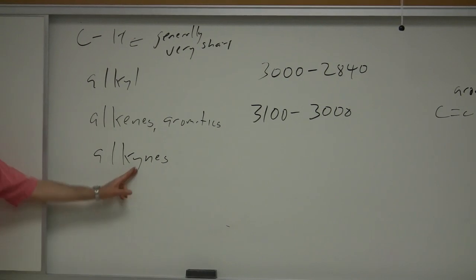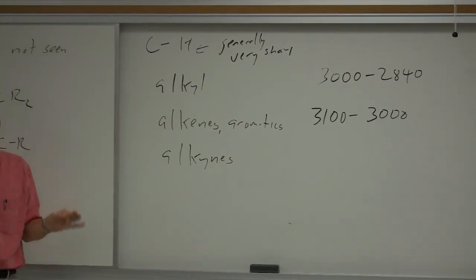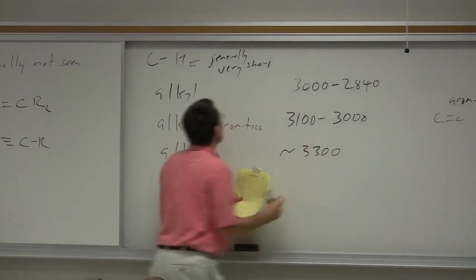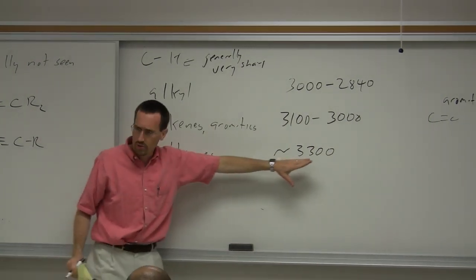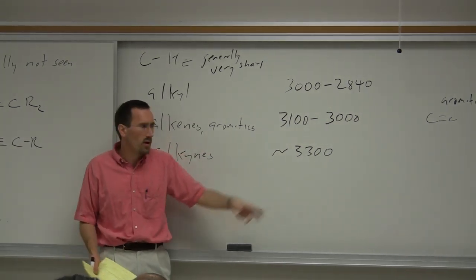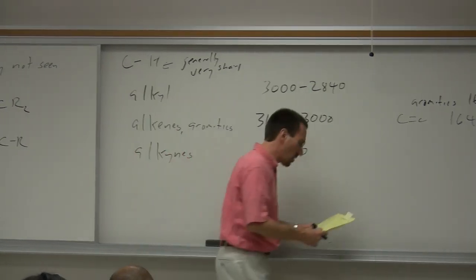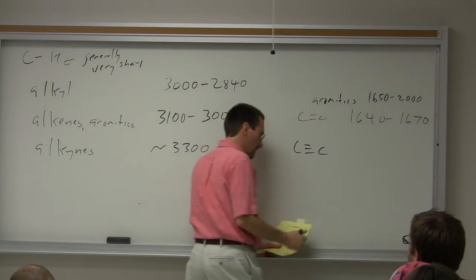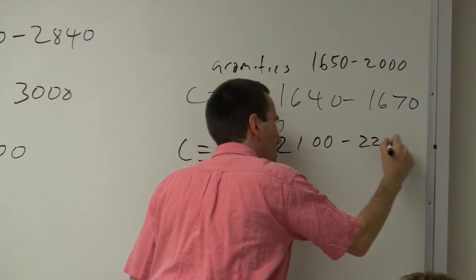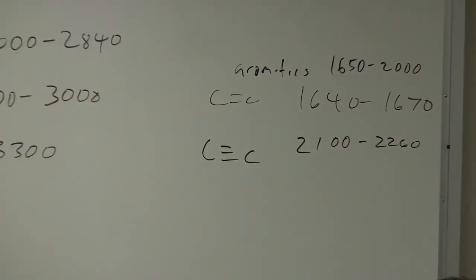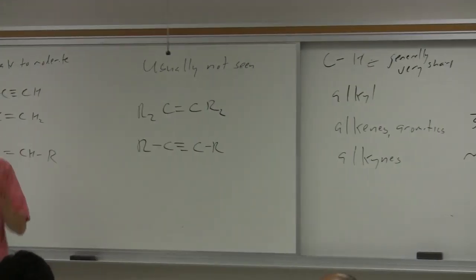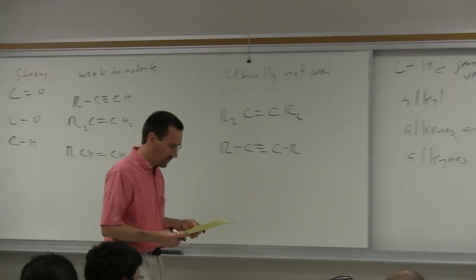For alkynes, if they are terminal, you have a CH group that tends to stand out at about 3,300 cm⁻¹, and they're generally very sharp. Alcohols also show up at about 3,300, but the pattern recognition is completely different: an alcohol is going to be a broad band, while an alkyne is a sharp band. If you can see the CC triple bond stretch, it's somewhere around 2,100 to 2,260 cm⁻¹ — if you see something in that region, it should pull you in.